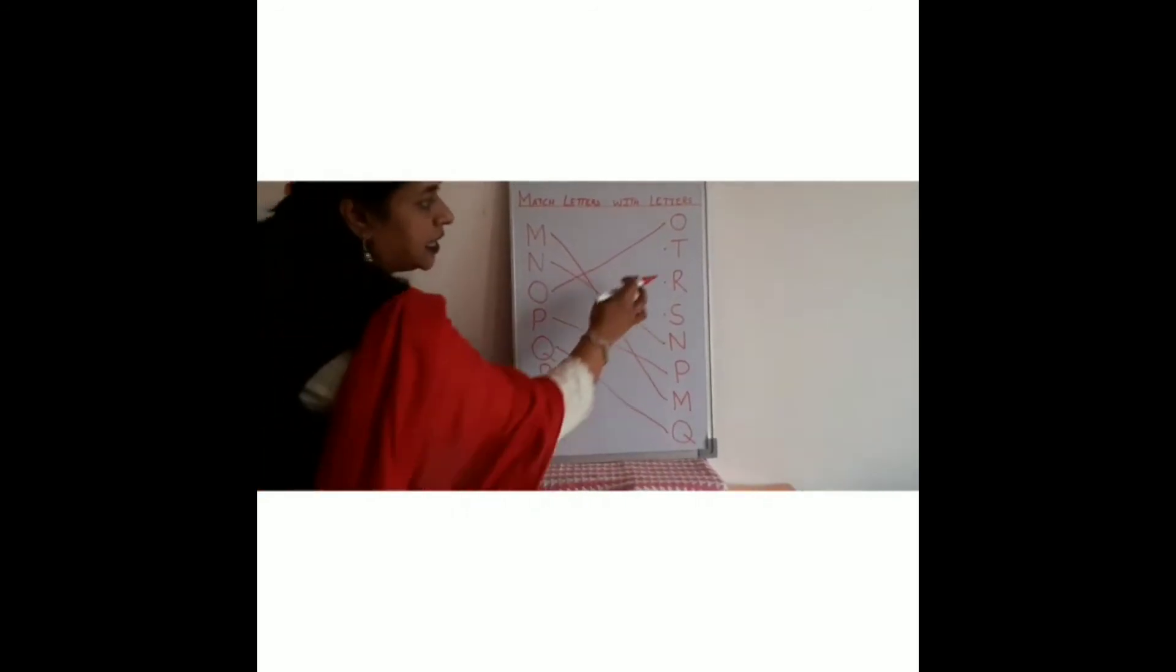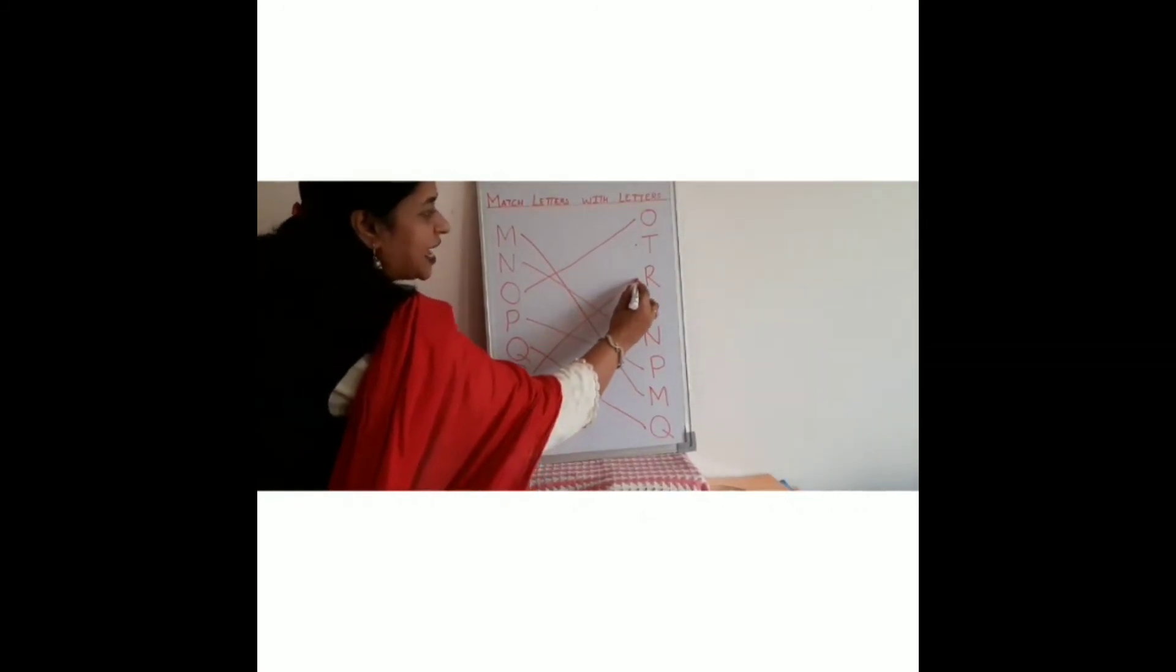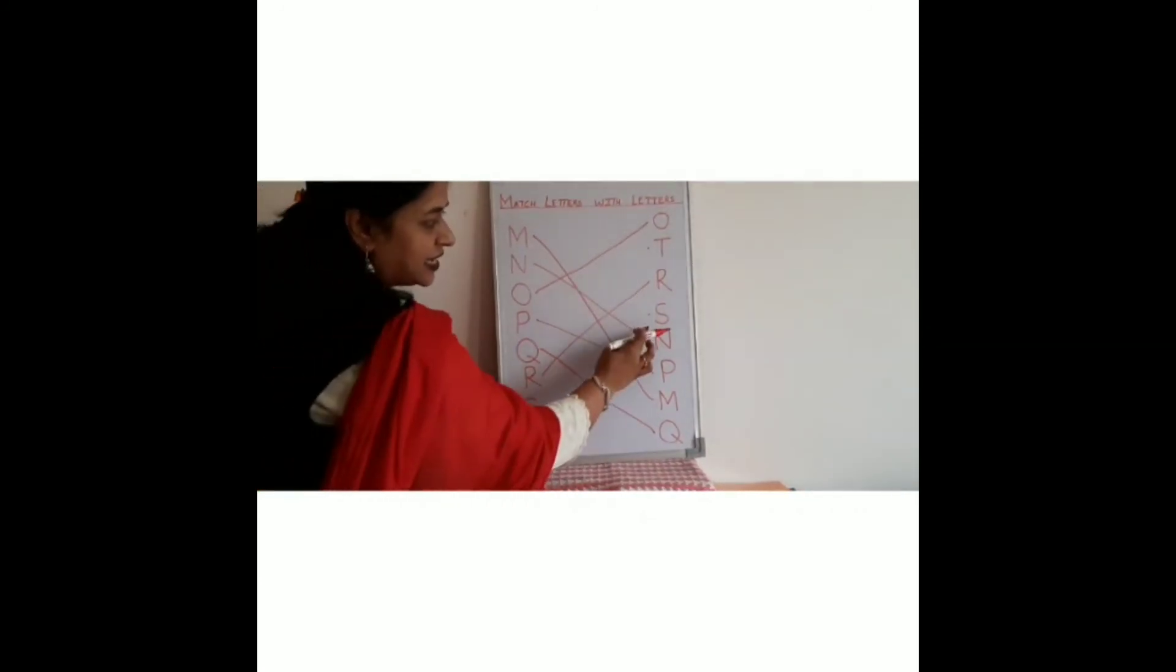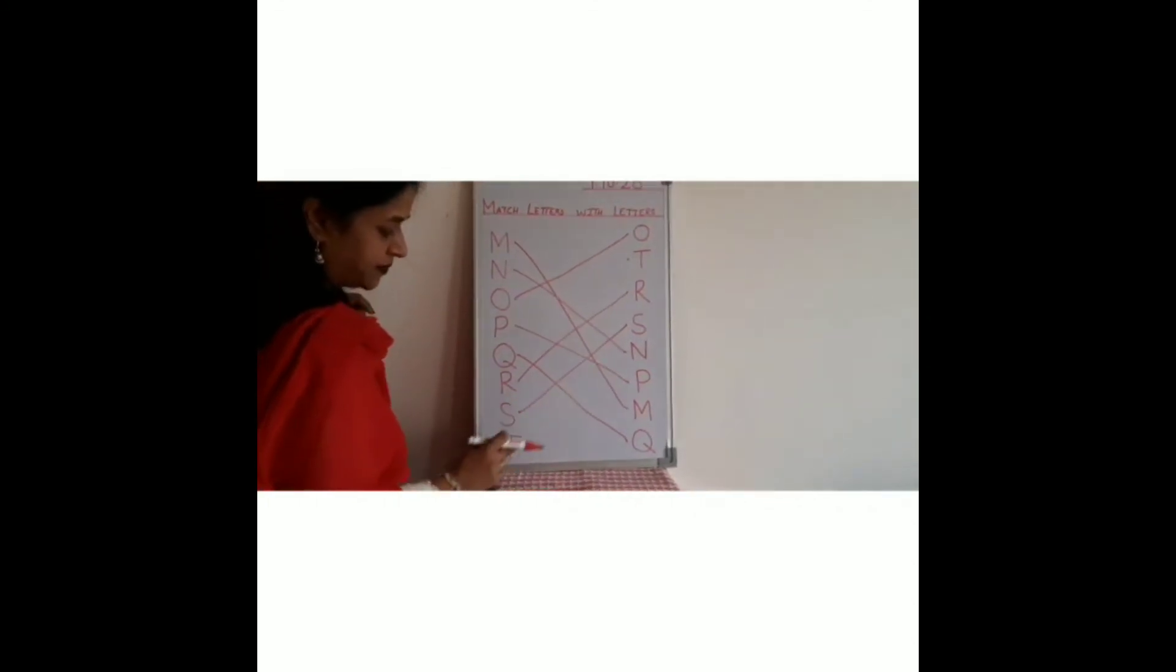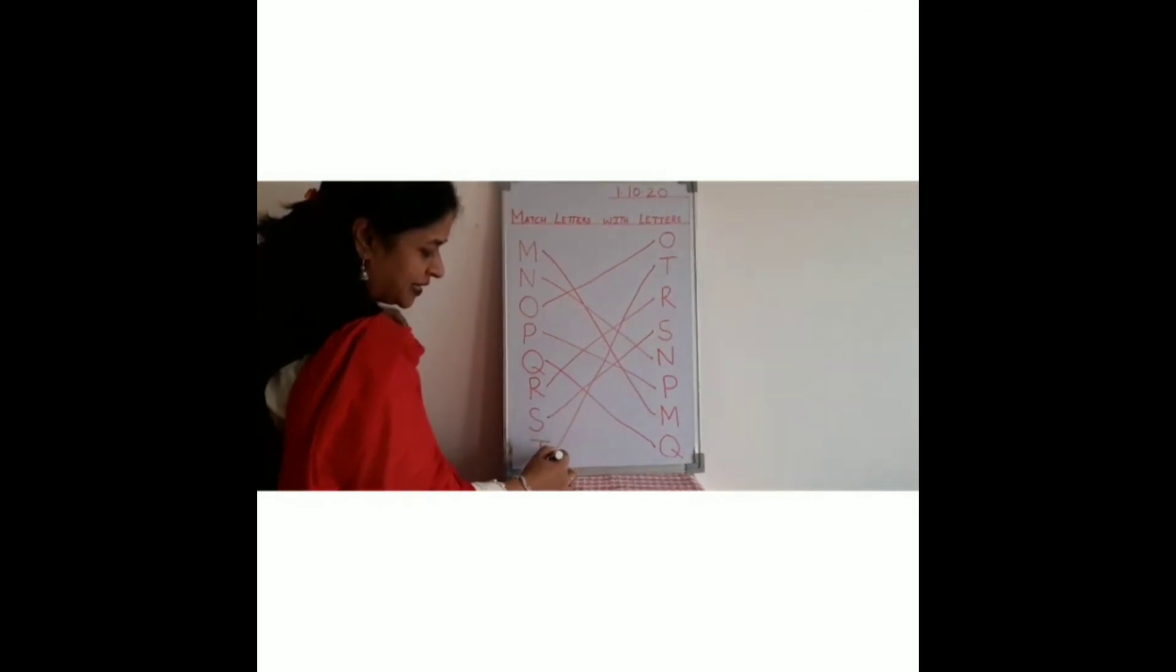Now R. See here T, R, S. So we will match R with the letter R. S, this is S, so from S to S. T, the only last one T, from T.